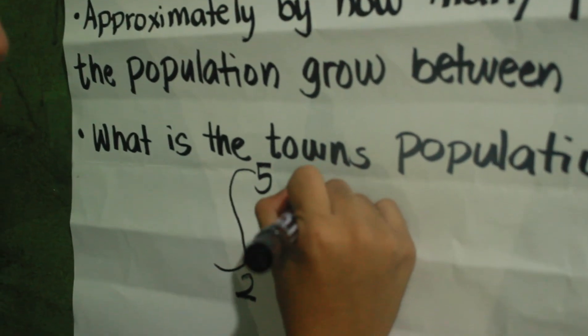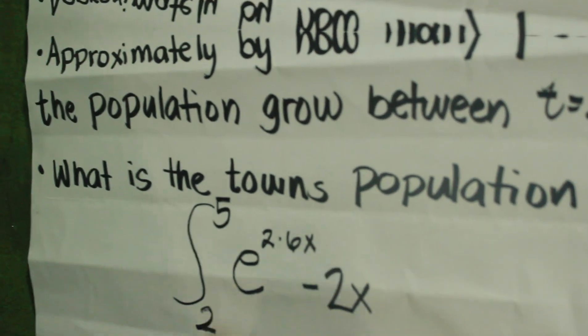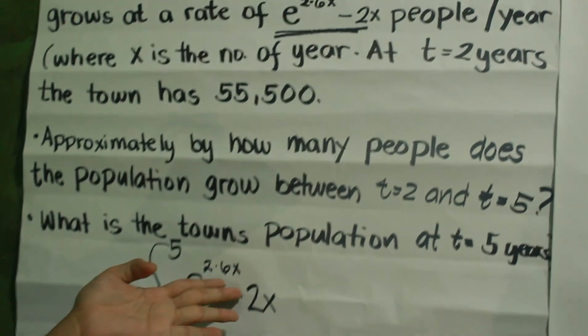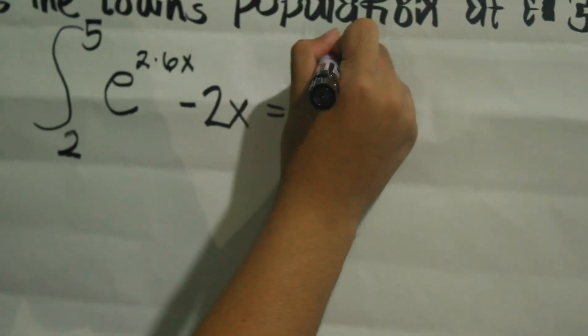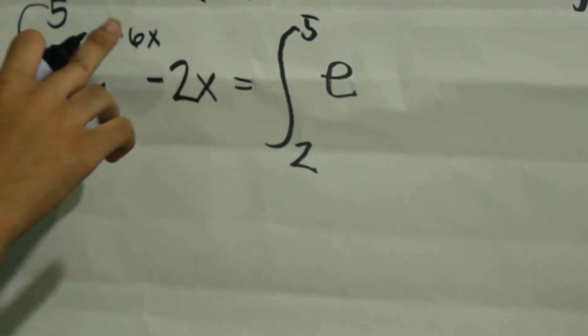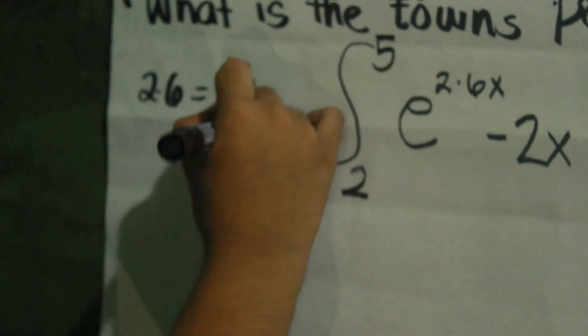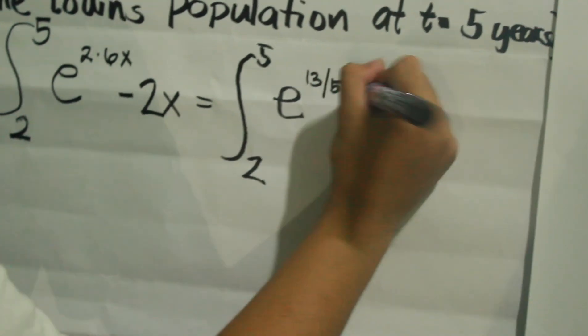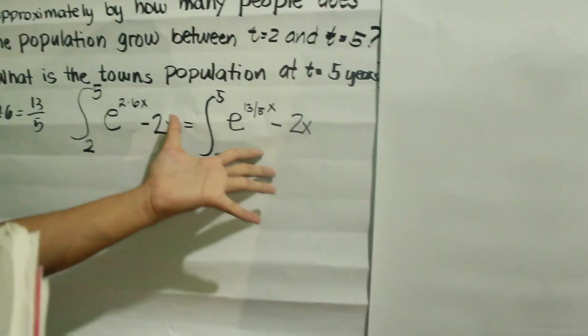The integrand is e raised to 2.6x minus 2x. Since this is in decimal form, it is sometimes more difficult to work with, so we are going to change it into fraction form. So it would become the definite integral from 2 to 5 of e raised to 13 over 5 x, since 2.6 is equal to 13 over 5.